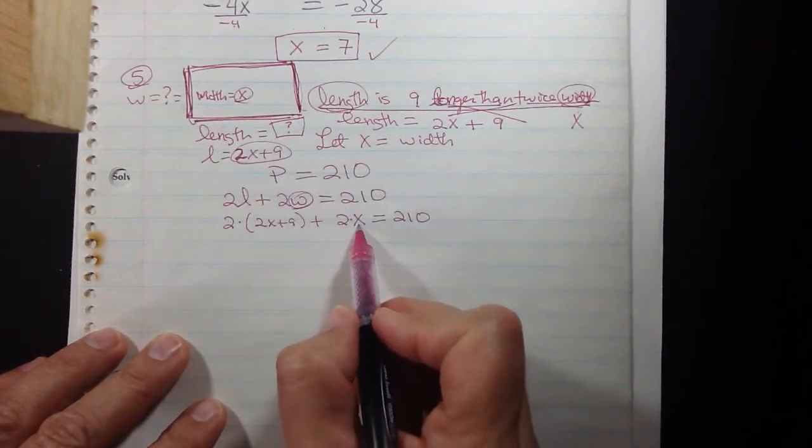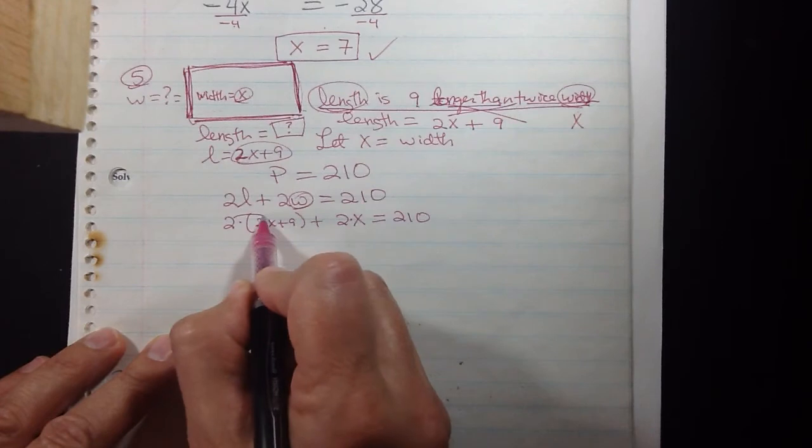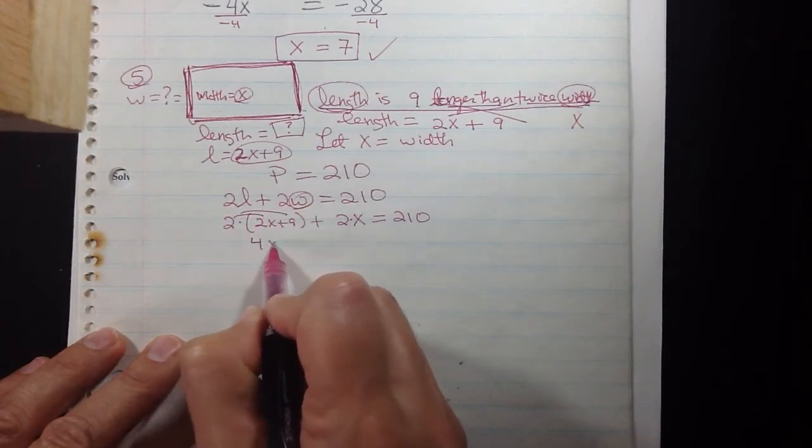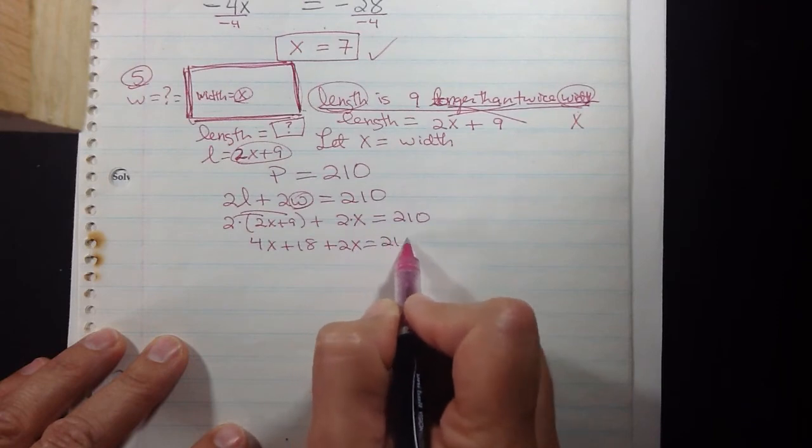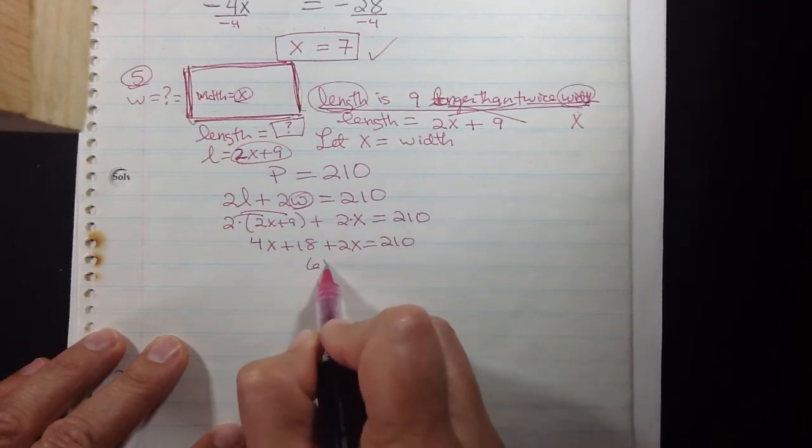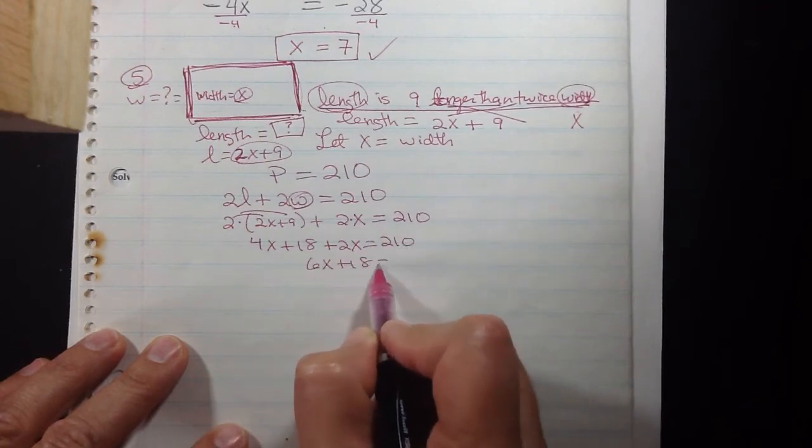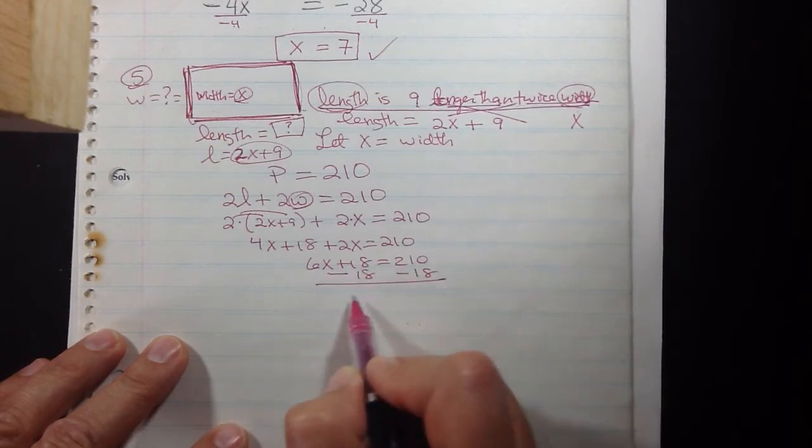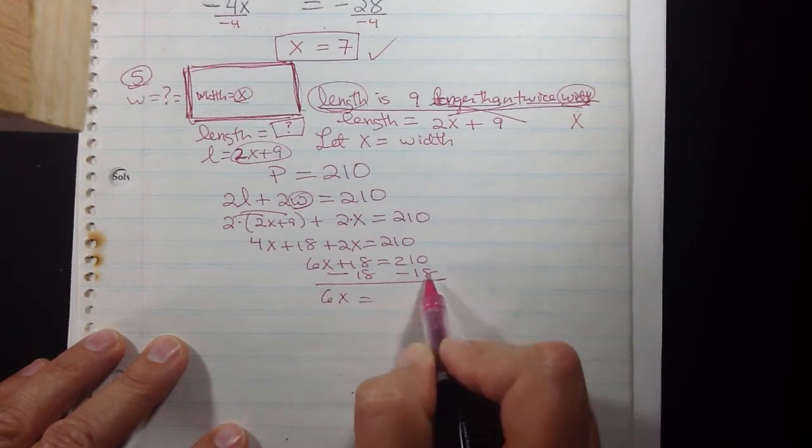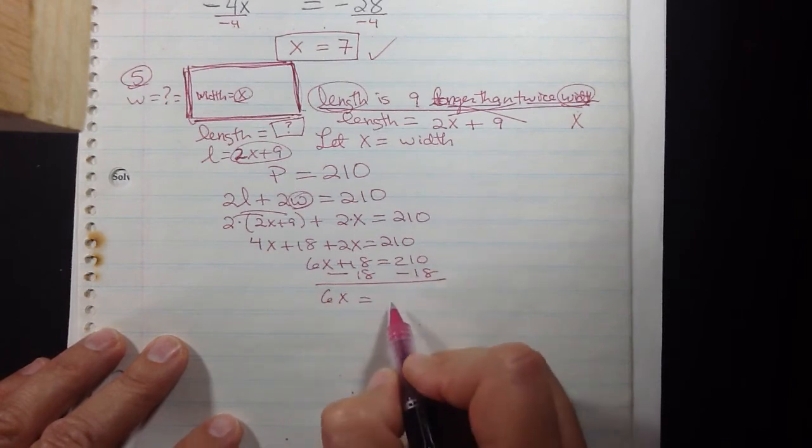So we distribute and get 4X plus 18 plus 2X equals 210, and add the X terms, 6X plus 18 is 210. Subtract 18 in order for the X's to be on the left and the constants to be on the right.